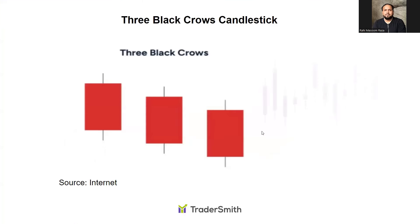Now, Three Black Crows — each candlestick opens within the real body of the previous candlestick, and each candlestick closes at new lows. It also forms a lower highs and lower lows price structure on the daily chart. When this pattern emerges, it suggests that sellers have gained control and that price will likely continue in a downtrend.